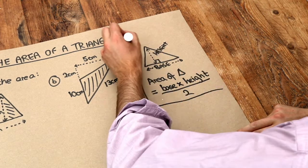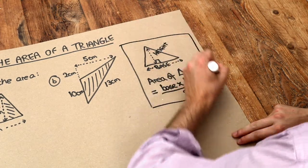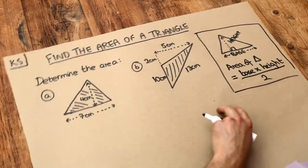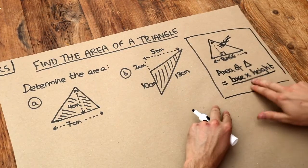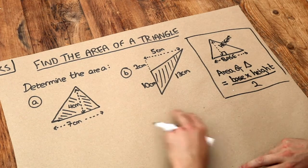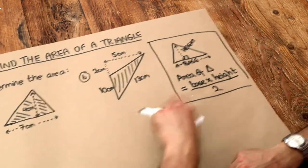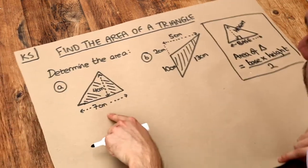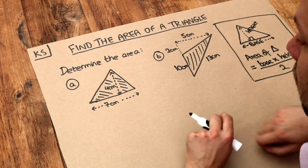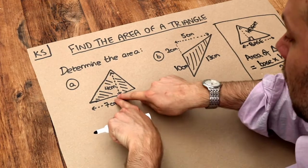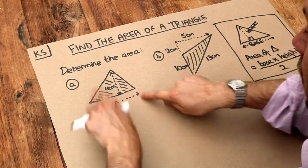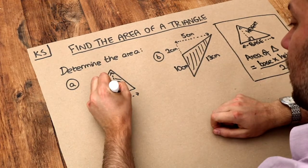And that's the only formula you have to use. So let's apply that to these examples here. We need to identify the base and the height of our triangle and then use the formula. Let's say we make this the base.